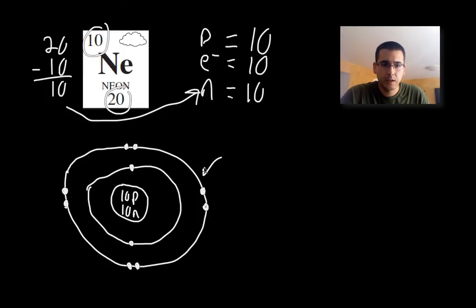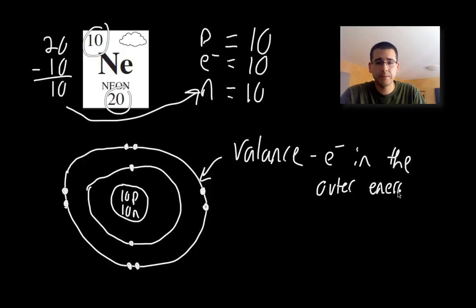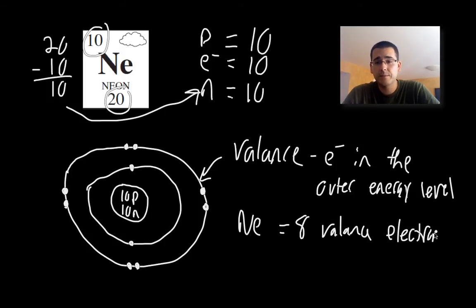But before we continue, there's one important vocabulary word that you need to know, and that's valence. The electrons on the outer ring only are called valence electrons. This really determines their chemical properties and what they bond with and things like that. So it's a really important thing to know. So this is the electrons in the outer energy level. In this case, neon would have eight valence electrons. So this is another important vocabulary word. You should have written that down.